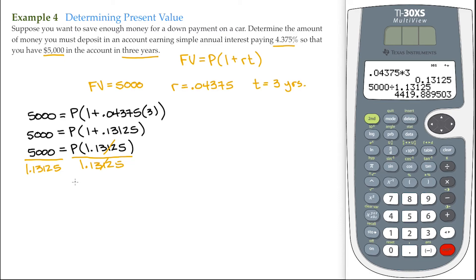So our principal is equal to, and we're going to round this to the nearest penny, that's $4,419 and to the nearest penny, $0.89.